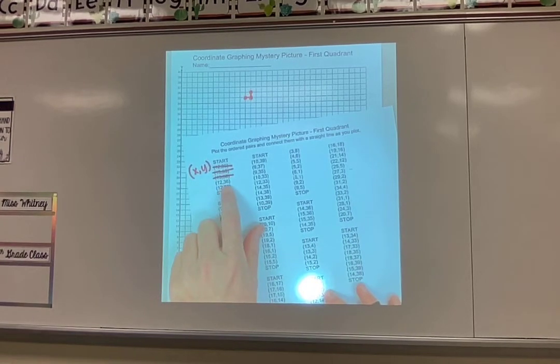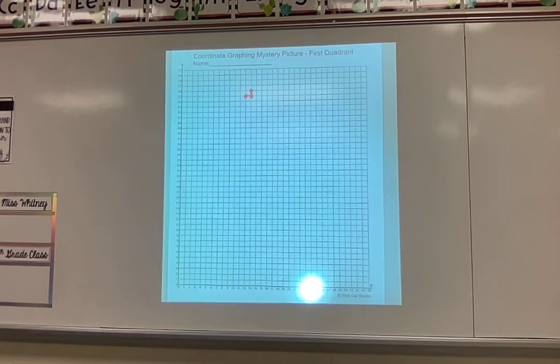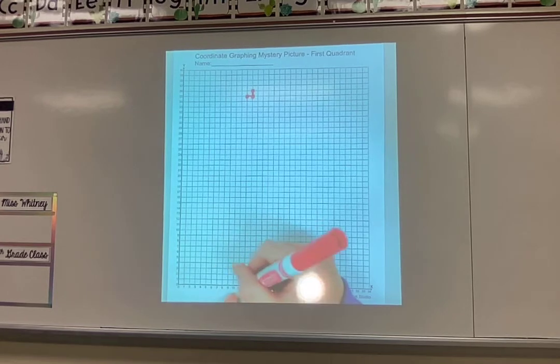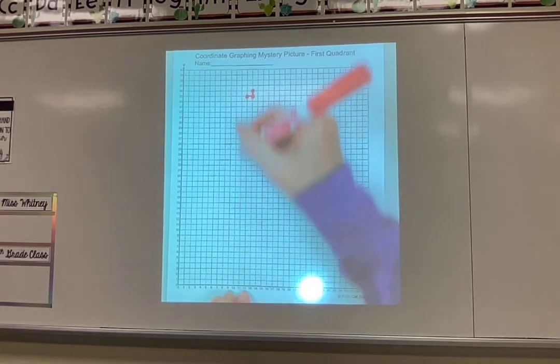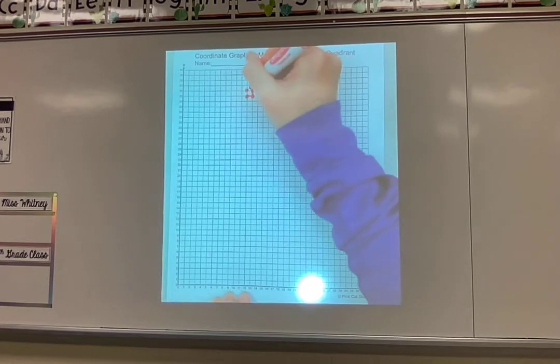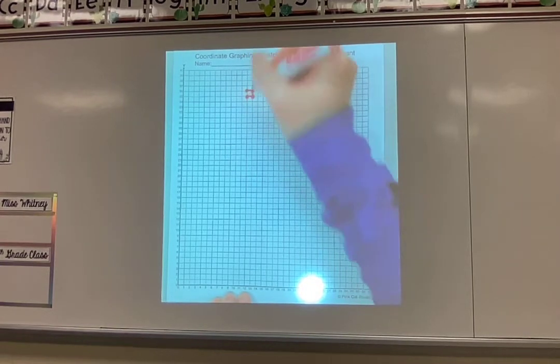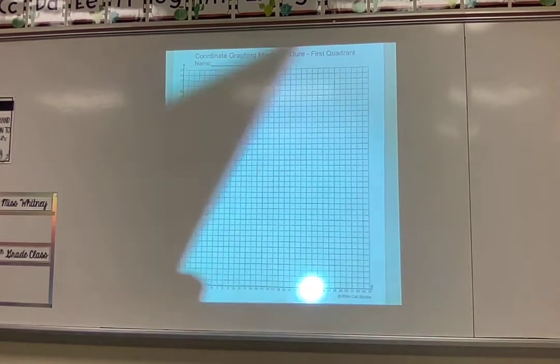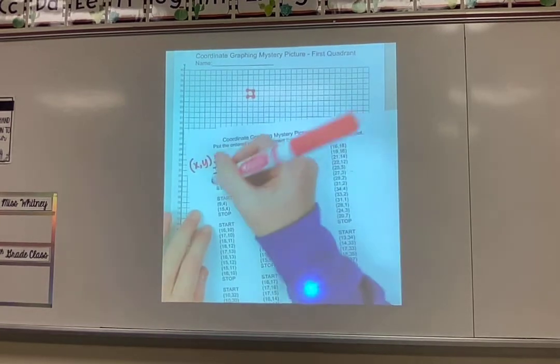Next is 12, 36. I'm going to go back to my coordinate plane. Go across to 12 because that's my X. Up to 36. Make my dot and connect it with the last one that I had made which is that one. So so far it looks like that. Go back to my list. Cross it off.